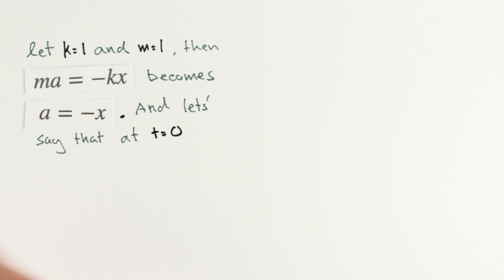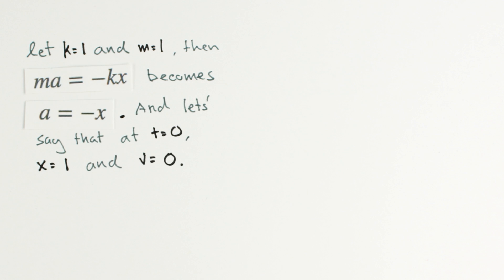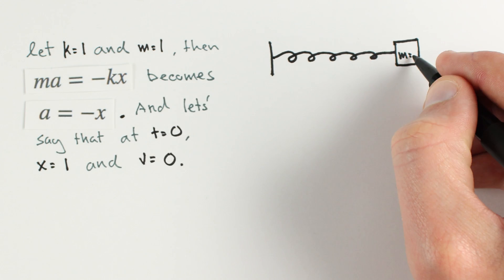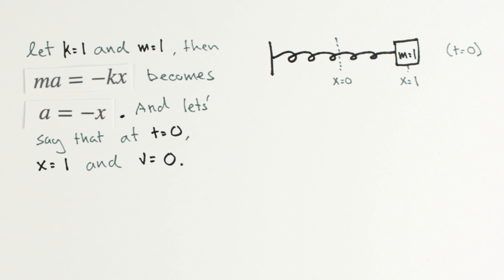We'll start our mass with a position of 1 and a velocity of 0. The instant we release our mass, it experiences a force from the spring.